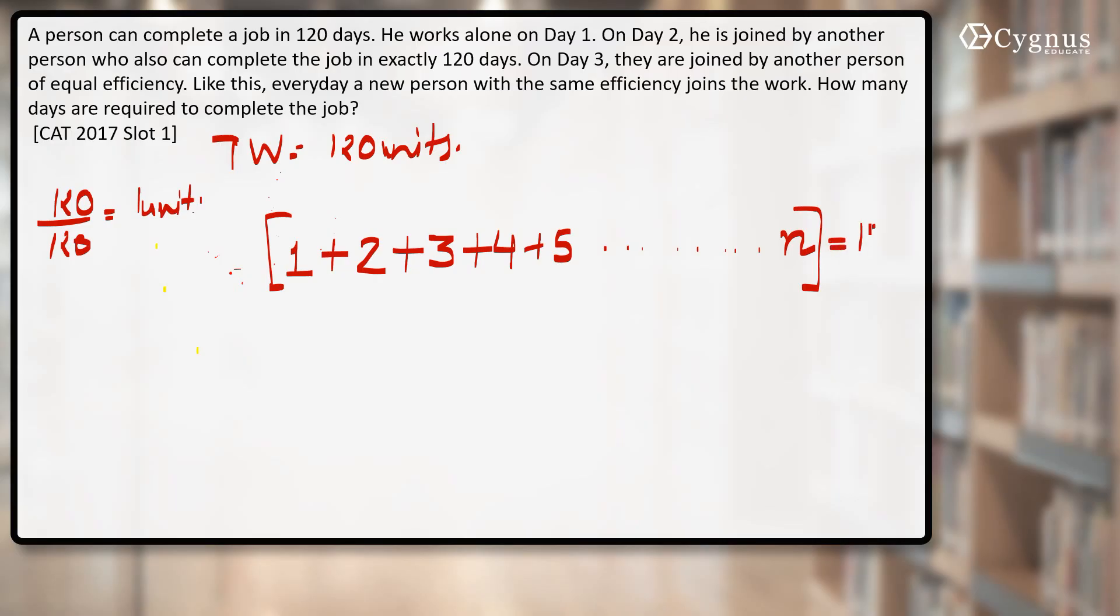And this has to be 120. This is nothing but the sum of first n natural numbers, which is equal to n into n plus 1 by 2, and this has to be equal to 120.